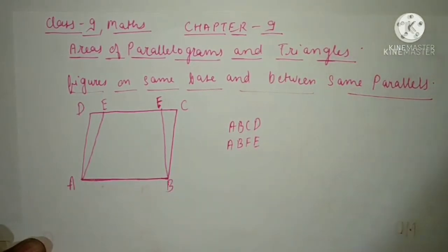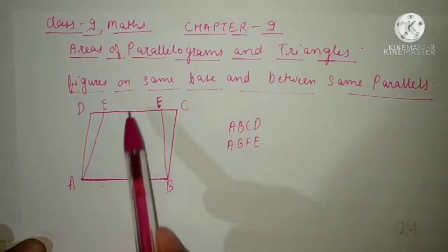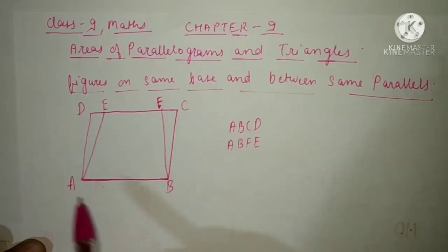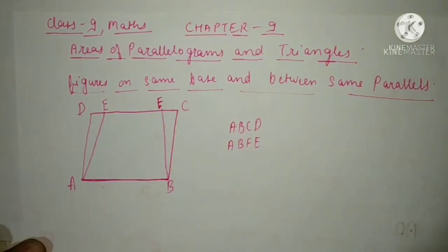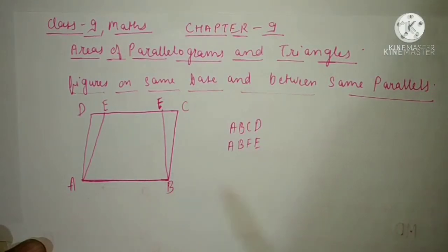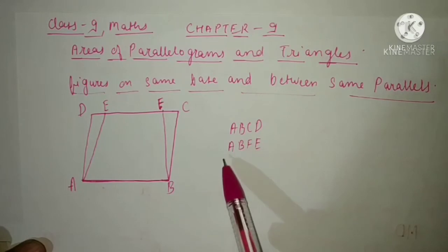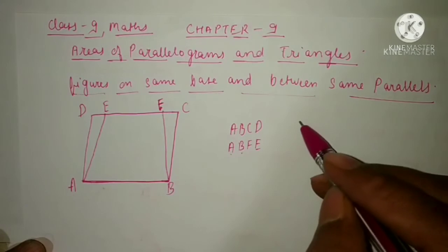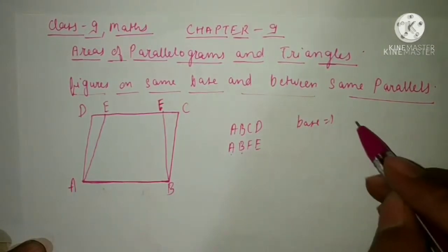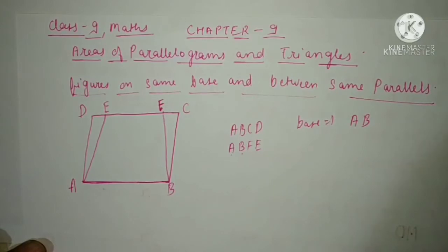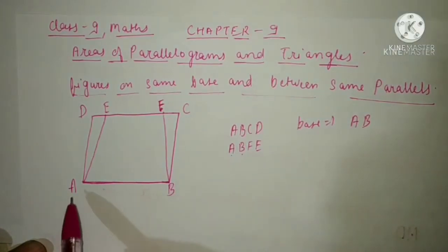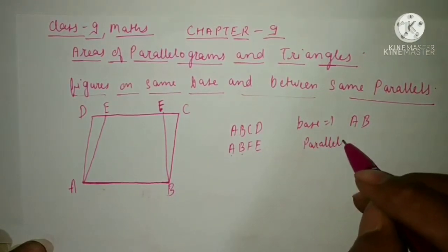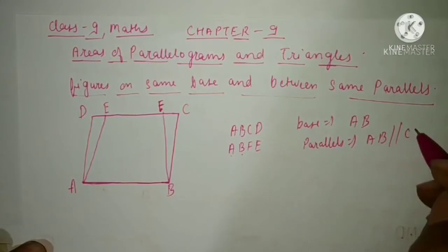In these two quadrilaterals, the base is the same, that is AB. They are also between the same parallel lines, that is AB is parallel to CD, and both figures lie between these two parallel lines. So we can say that quadrilateral ABCD and quadrilateral ABFE lie on the same base AB and between the same parallels AB and CD.